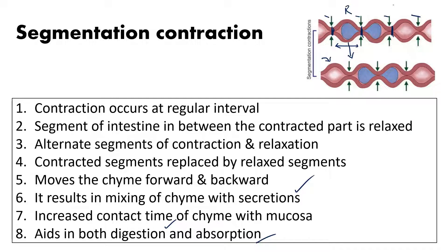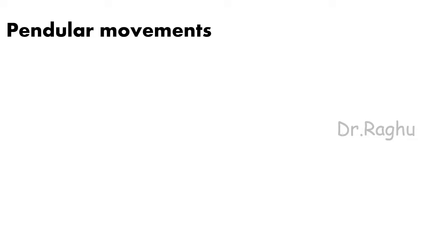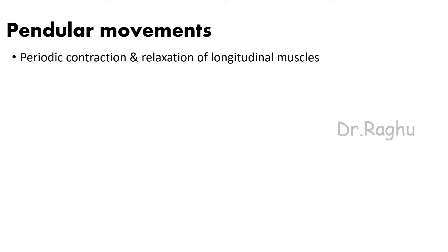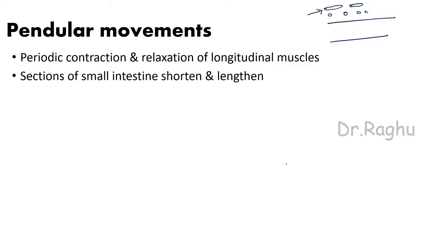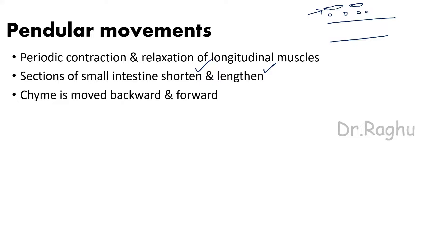The second mixing movement is pendular movement. As the name suggests, there is periodic contraction and relaxation of the longitudinal muscle. The intestine has two kinds of muscles in the muscular layer: circular muscle and longitudinal muscle. Periodic contraction and relaxation of the longitudinal muscle causes a section of the small intestine to repeatedly shorten and lengthen.